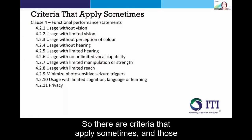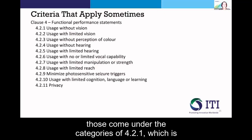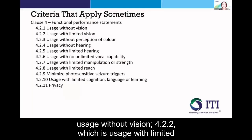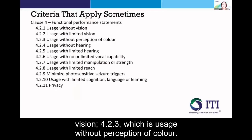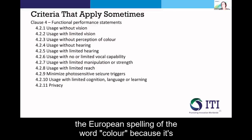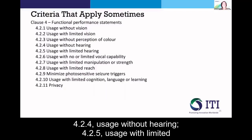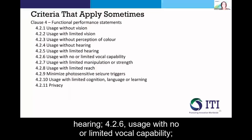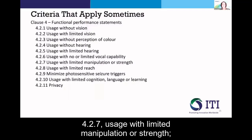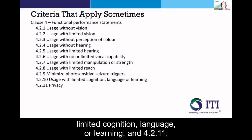There are criteria that apply sometimes, coming under clause 4: functional performance statements. These are 4.2.1 usage without vision; 4.2.2 usage with limited vision; 4.2.3 usage without perception of colour — note the European spelling with a 'U'; 4.2.4 usage without hearing; 4.2.5 usage with limited hearing; 4.2.6 usage with no or limited vocal capability; 4.2.7 usage with limited manipulation or strength; 4.2.8 usage with limited reach; 4.2.9 minimizing photosensitive seizure triggers; 4.2.10 usage with limited cognition, language, or learning; and 4.2.11 privacy.